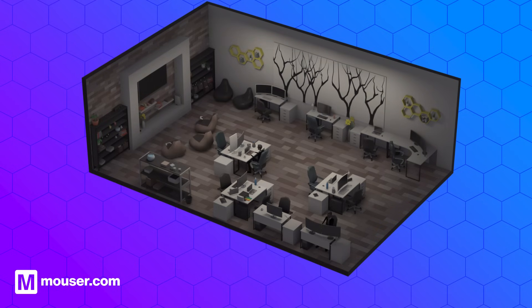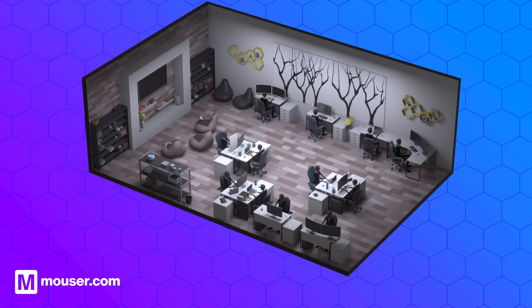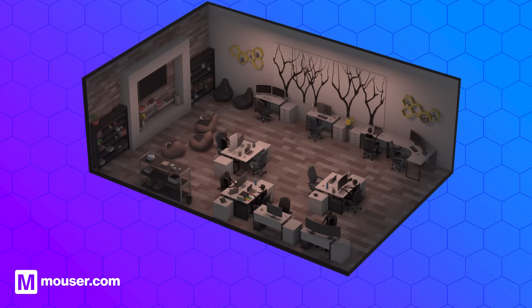In an office, HCL systems can dynamically adjust the lighting throughout the day. Bright, cooler light in the morning boosts alertness, and transitions to warmer, dimmer light towards the evening, promoting relaxation.